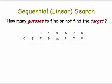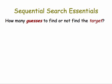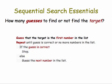Let's take a look now at sequential or linear search. It's the same essential question. How many guesses to find or not find the target? Here's the implementation of sequential search. Again, there's lots of details here that aren't essential to the basic question of how many guesses will it take to find or not find the target.